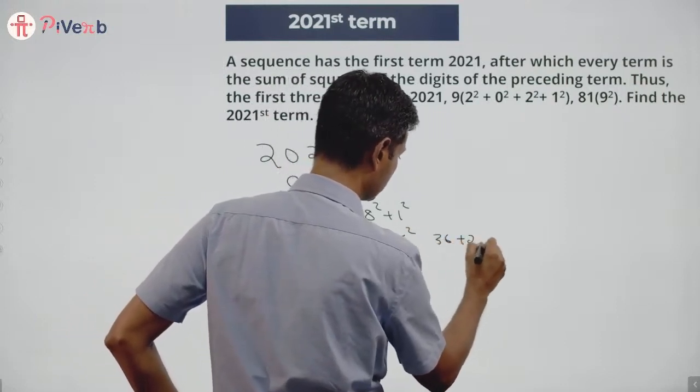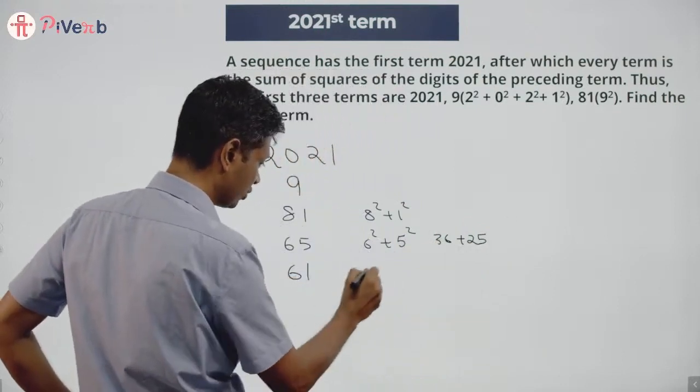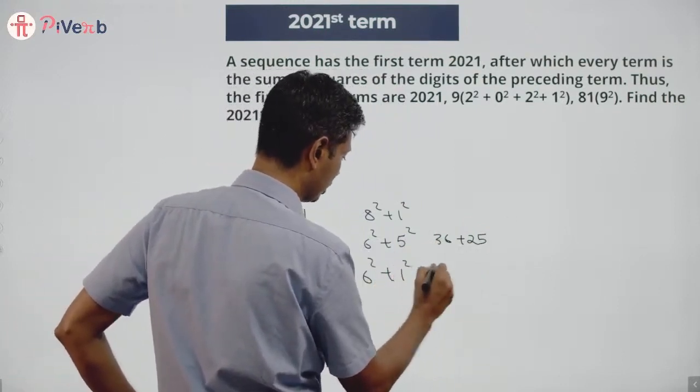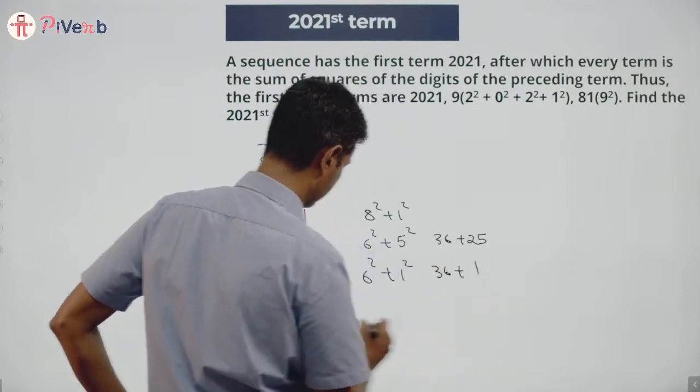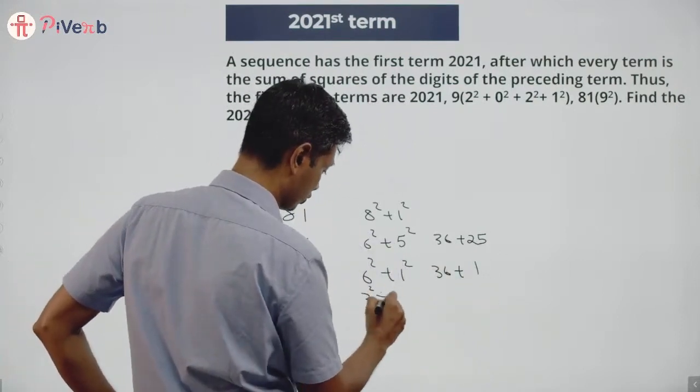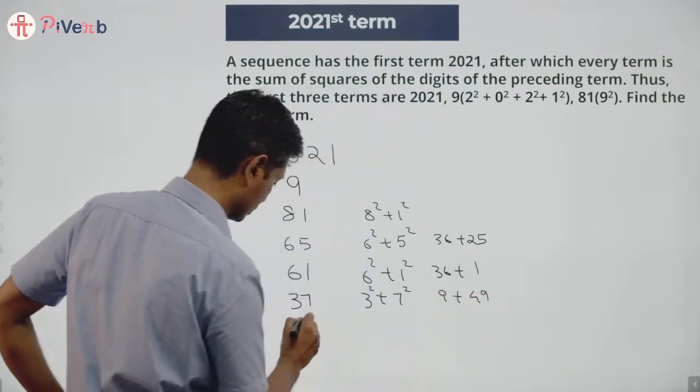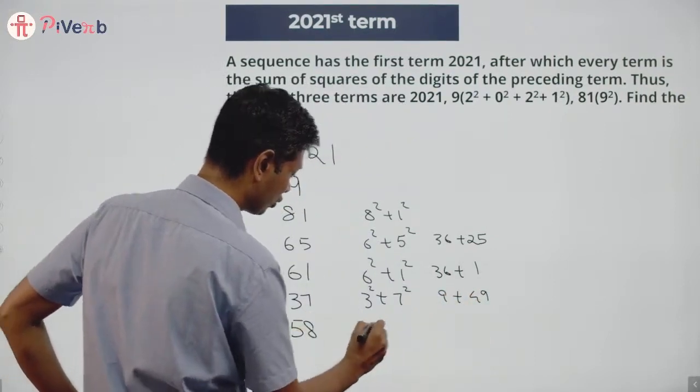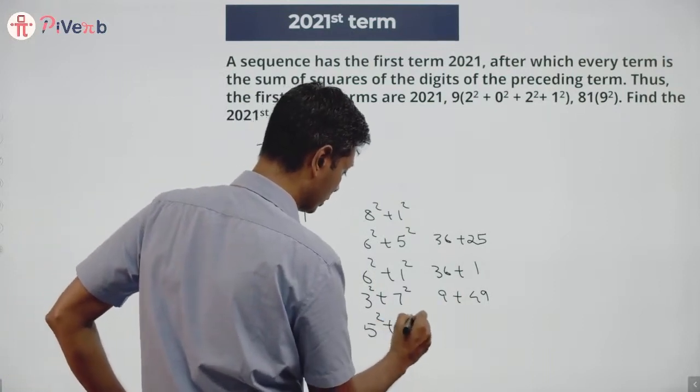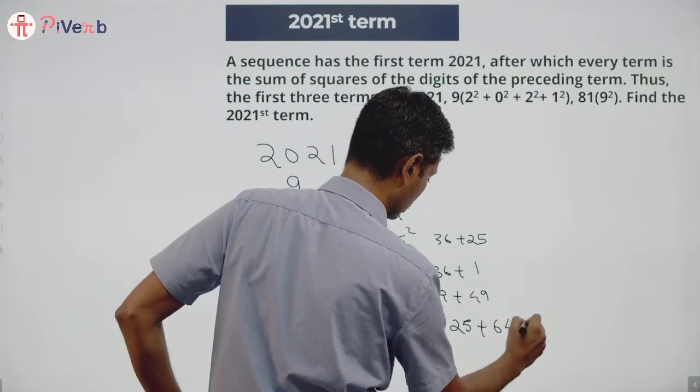Next term: 6² + 5² = 36 + 25 = 61. Next term is 6² + 1² = 36 + 1 = 37. Next is 3² + 7² = 9 + 49 = 58.